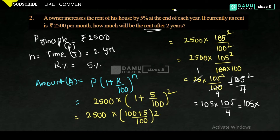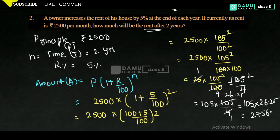So 105 by 4 is 26.25, and 105 into 26.25 gives 2756.25. So the amount after 2 years is 2756.25 rupees. Another method is to calculate 5 percentage of 2500 for the first year and repeat. Thanks for watching, please subscribe.